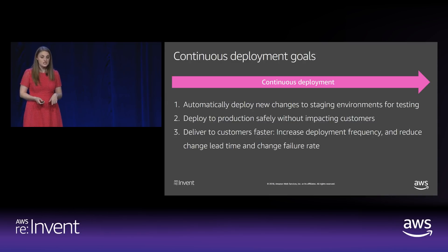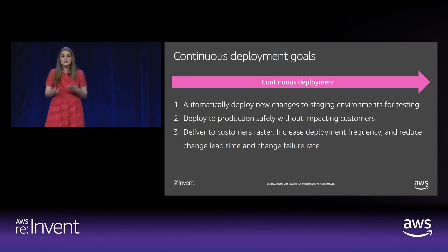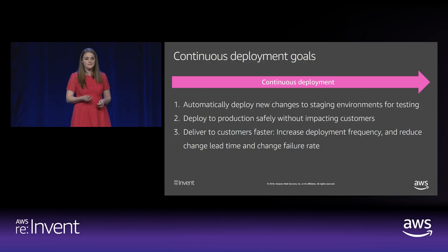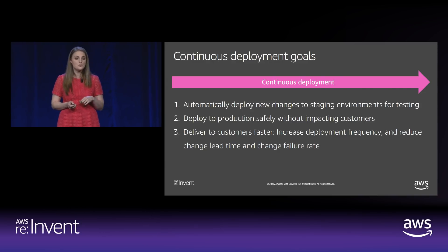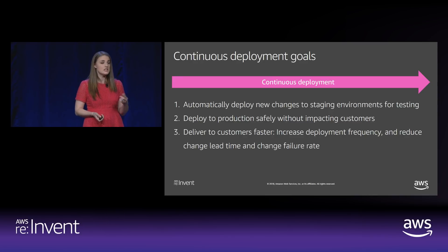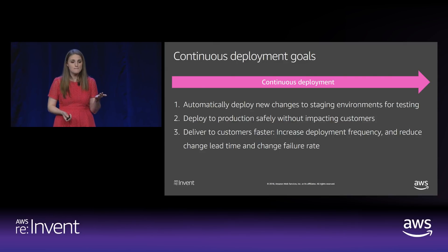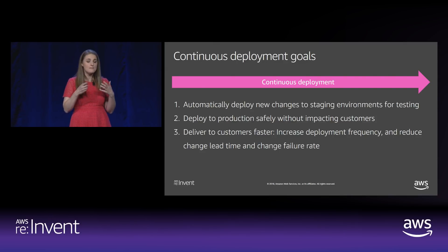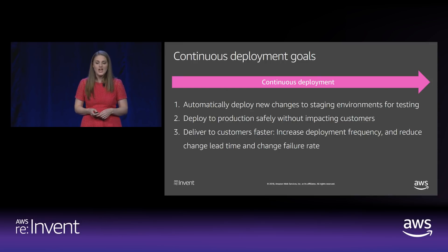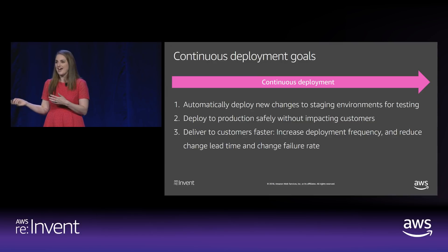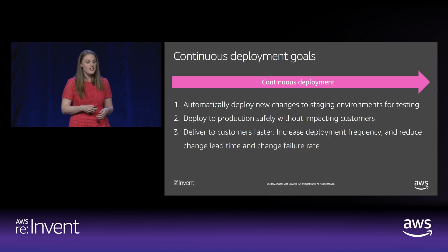Let's review the continuous deployment goals. Number one: automatically deploy new changes to staging environments for testing — done in CodePipeline by simply adding a staging stage and environment to your pipeline. Number two: deploy to production safely without impacting customers — CodeDeploy safety features including validation hooks, canary deployments, blue-green deployments, fast rollbacks, and automatic alarm monitoring are great tools for minimizing impact in production. And finally, all of this automation with CodePipeline helps us deliver to customers faster, which is really what we're trying to get out of this.